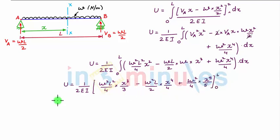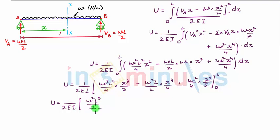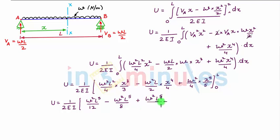Applying the limits, strain energy U = (1/2EI) · [W²L⁵/12 − W²L⁵/8 + W²L⁵/20] minus zero, since applying the lower limit makes all terms zero. There is a common term W²L⁵ in all three terms.